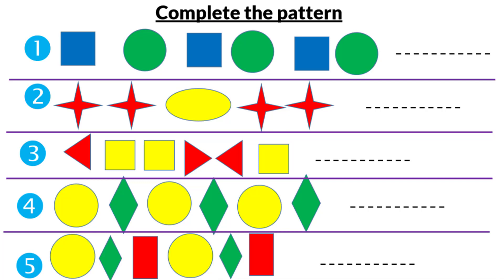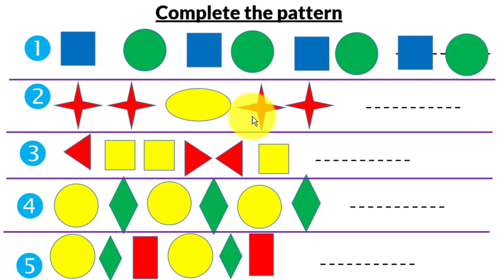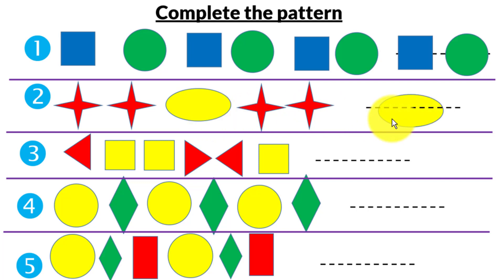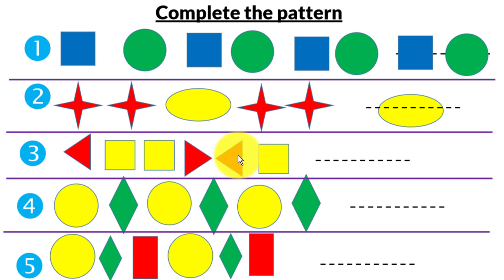Now we will repeat: square, circle. What is the next guys? Yes, the next is square, circle. Number two: double star, oval, double star — so we have oval and the pattern continues with triangle, triangle, then the reverse.